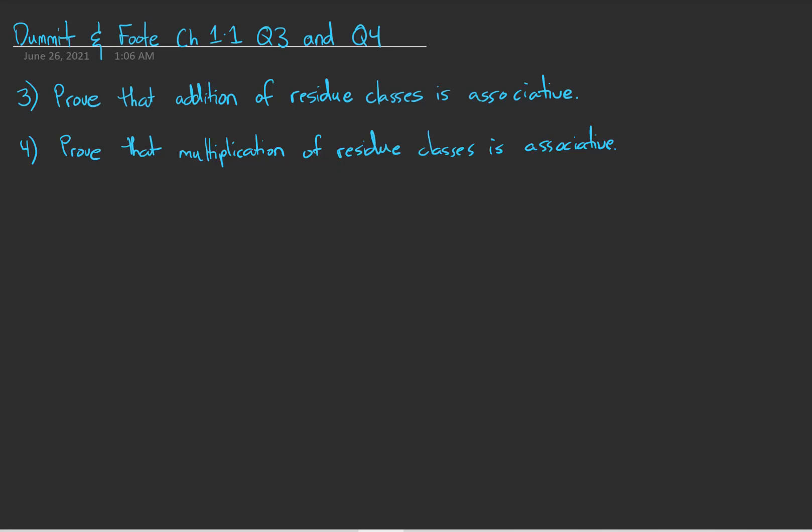In the textbook, they say that in both cases we may assume that addition and multiplication of residue classes are respectively well defined, but you might not always be allowed to assume that. So first, I'm going to prove that addition modulo n and multiplication modulo n are both well defined, and then answer the actual questions showing that addition is associative and multiplication is associative.